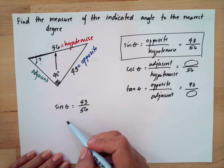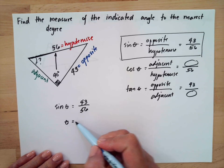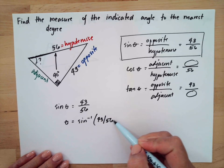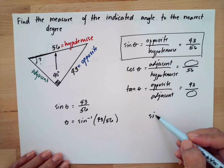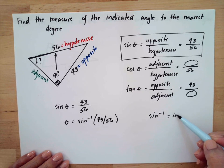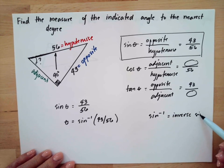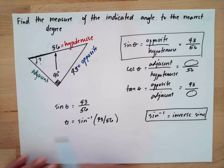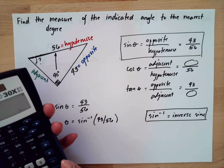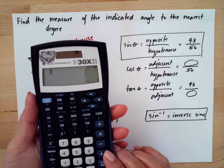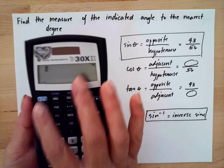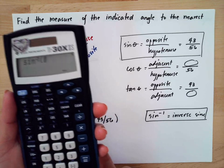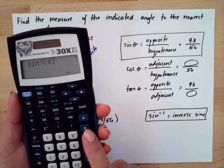To get the angle, we need to do the inverse of this — sine to the negative one, which is the inverse sine. We use this to find the angle. Using your calculator, you will press the second button for inverse, then sine, and type 43 divided by 56.